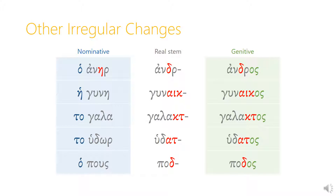He-gune, a woman — the eta drops off in the real stem and is replaced by alpha-iota-kappa, so the real stem is gunaik, giving us the genitive form gunaikos. To-gala, milk — nothing's dropped off, but the kappa-tau combination is added onto the real stem to give us galact, and the genitive form then is galactos. And to-hudor drops the omega-rho and replaces it with an alpha-tau, so the real stem is hudat, and the genitive form is hudatos. Finally, ha-pous, foot — drops the second half of the nominative form, the upsilon and sigma, and replaces it with a delta, so the real stem is pod, from which we get the genitive form podos.